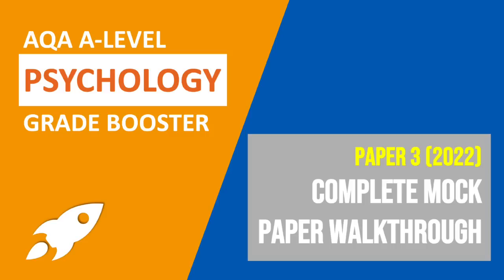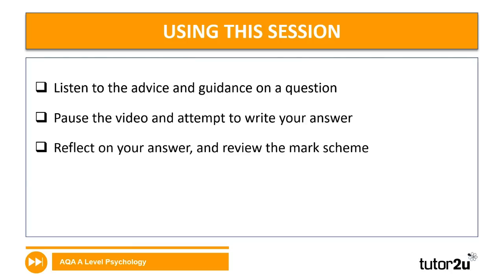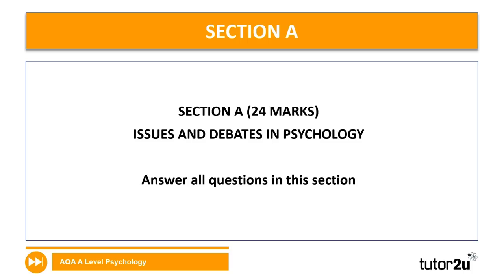This is the Paper 3 Advanced Information Whole Paper Walkthrough. In this session, we're going to be listening to advice and guidance on each question. You are encouraged to pause the video and attempt to write your answer in timed conditions, and then we're going to reflect on your answer and review the mark scheme together. The first section is the common section everyone will be assessed on in Paper 3: issues and debates in psychology, worth a total of 24 marks.